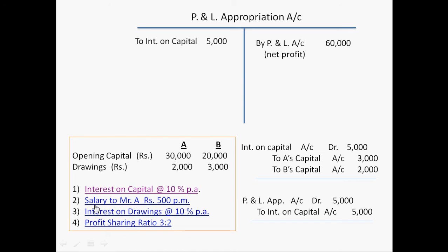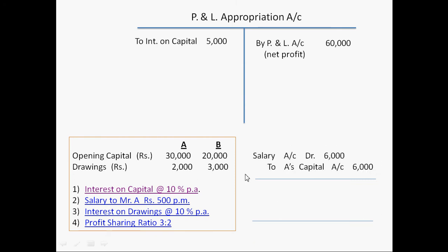Now the second provision is regarding salary. Firm will allow salary to Mr. A at the rate of Rs. 500 per month. So whole year salary will be 500 multiplied by 12, so A is entitled for salary of 6,000. Entry for this purpose: salary account debited 6,000, to A's capital account 6,000. Salary account is debited here as it is a loss to the firm, and A's capital account is credited just to increase the balance of A's capital account as firm is not paying the 6,000 to Mr. A right now.